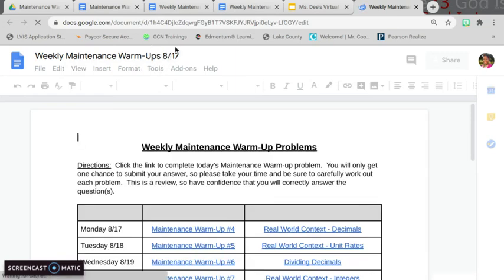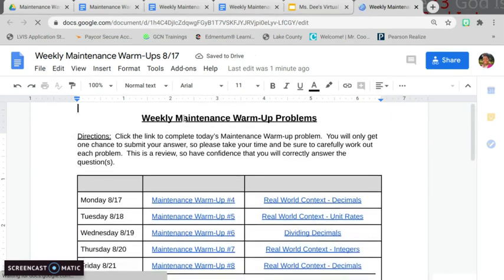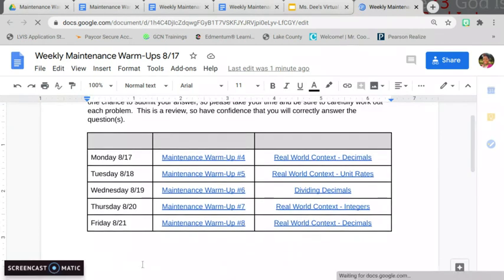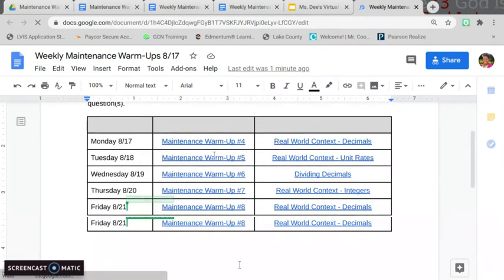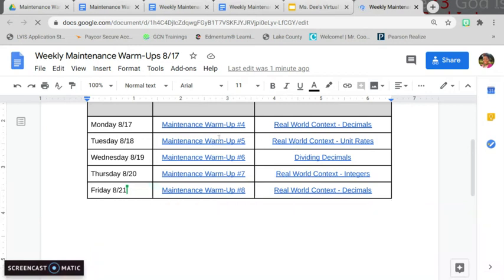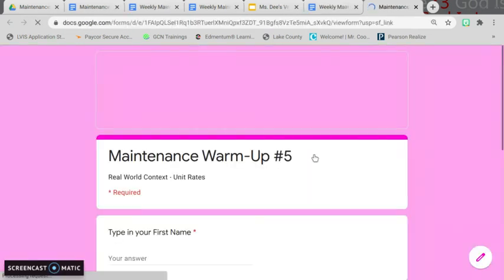I see the title at the top. It is named correctly. And here I have week August 17th on down. So let's go ahead and click one just to make sure. It doesn't matter if you click the word maintenance warm-up or real-world because I highlight it all the way across. And once I click that.